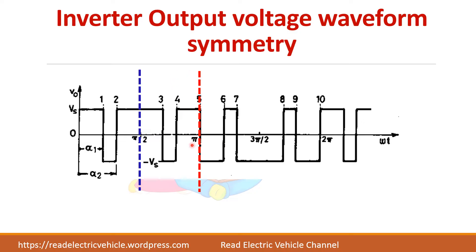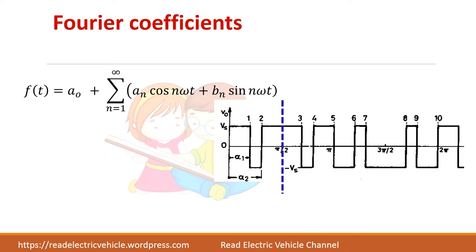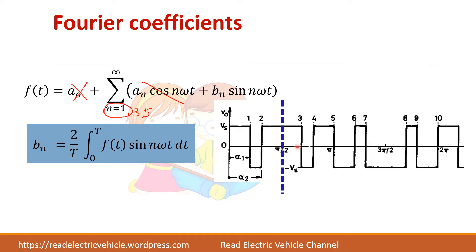If you take this waveform, you can see that around pi, the two parts are symmetrical, and around pi by 2, these parts are also symmetrical. This means in this waveform there are no even harmonics — only odd harmonics exist. Let us do the Fourier series analysis for this voltage waveform. We know only the BN term exists because it satisfies quarter wave symmetry and even numbers become zero. So let us calculate BN — the BN formula allows us to take the total time period as pi by 2 because the waveform is symmetrical.